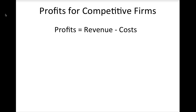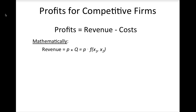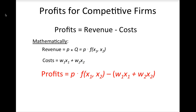If we start with a simple model in which a firm produces one output and uses two inputs, then mathematically, a firm's revenues are the price of its output times the quantity of output it produces, which is measured by the production function. The firm's costs will be the sum of the price of each input multiplied by the quantity of input the firm uses, and profits will be the difference between these two expressions.